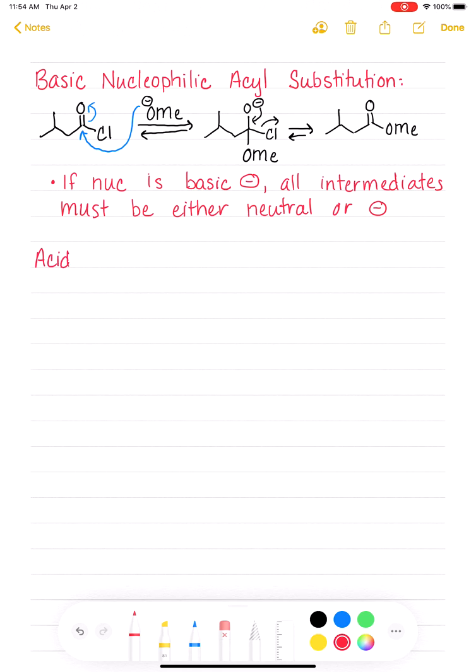So now let's look at the acidic mechanism. Acidic nucleophilic acyl substitution. And we are going to use the same acid chloride as our reactant.